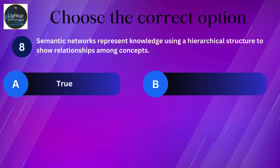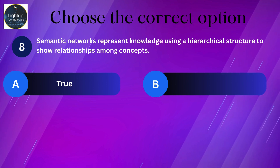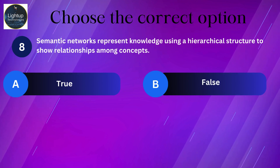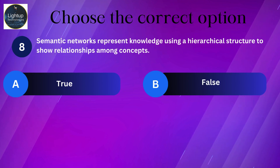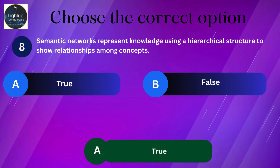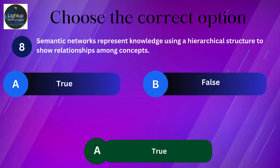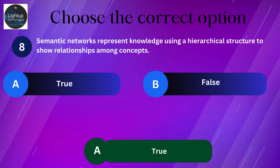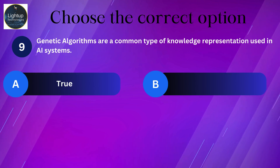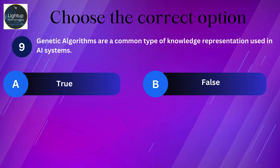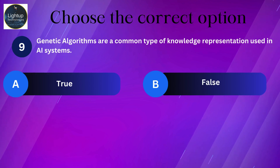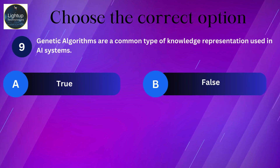A bias term in a neural network helps prevent overfitting by regularizing the model. Genetic algorithms are a common type of knowledge representation used in AI systems.